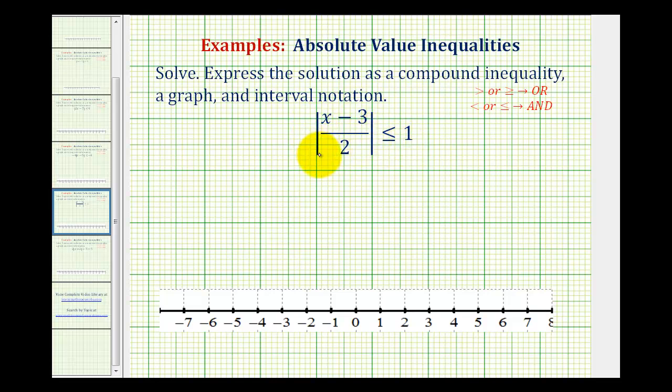Since absolute value represents a number's distance from zero, we're looking for the values of x where x minus three divided by two would have a distance from zero that's less than one unit. And since the original inequality is less than or equal to, that means we'll have a compound inequality or two inequalities connected by the word and.